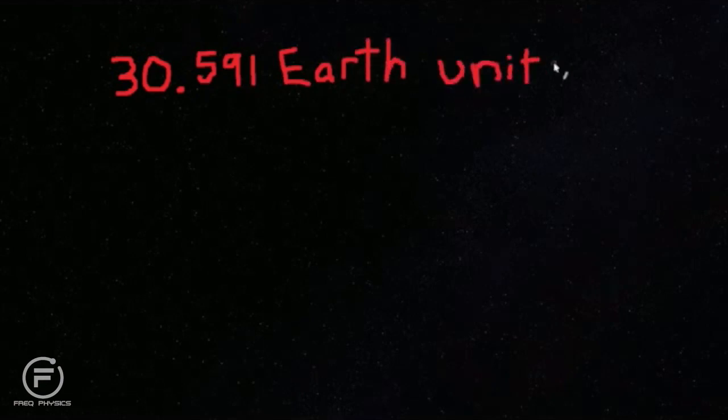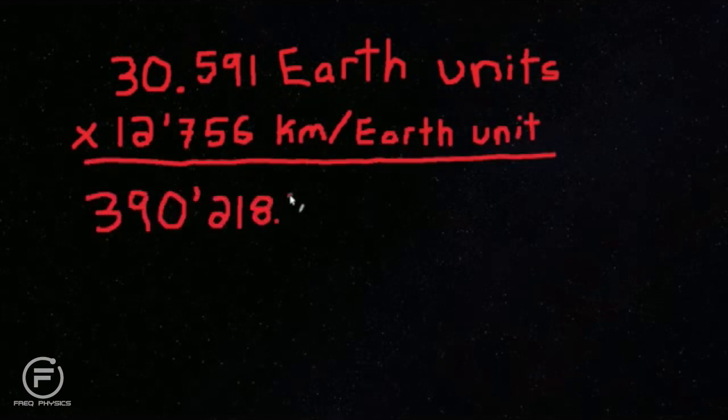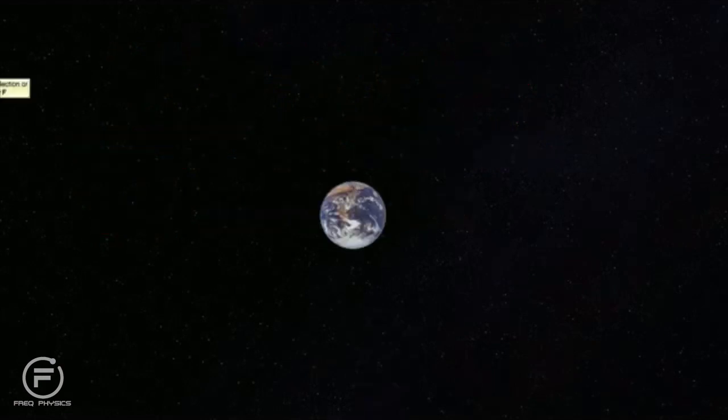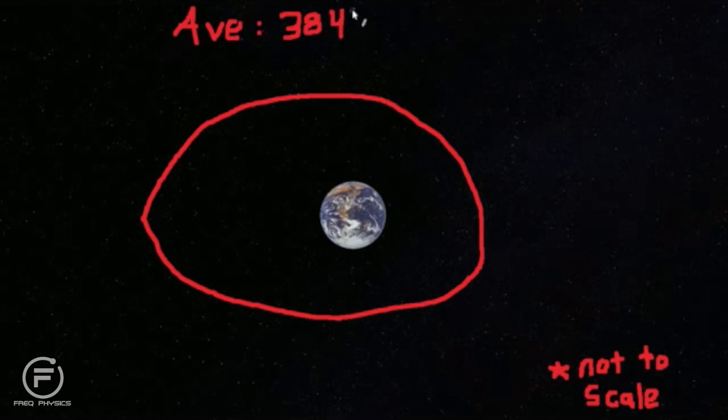Then we can multiply the total Earth units by the diameter of one Earth, which is 12,756 kilometers. And we find 390,218.796 kilometers. That is the sum total of distances divided by the number of different distances is around 384,500 kilometers.